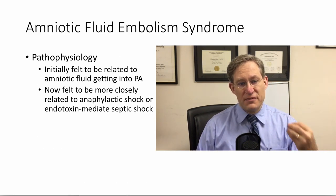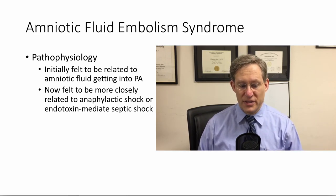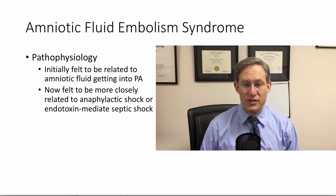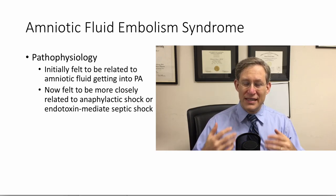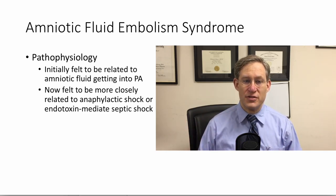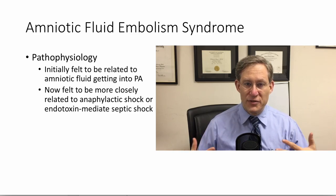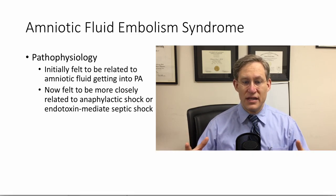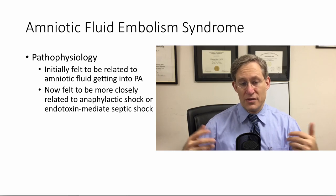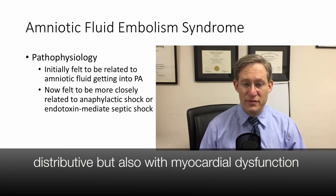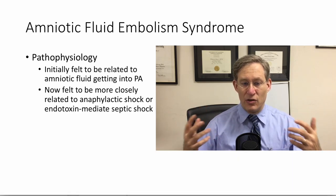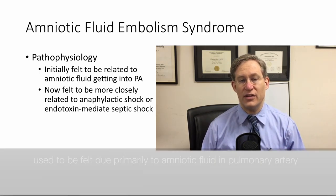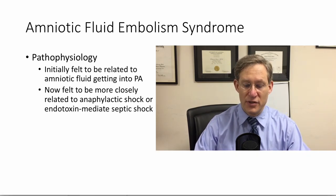This disease was initially described in the late 1920s, and it was felt that it had to do with amniotic fluid getting into the maternal circulation and the pulmonary artery. But as more analysis and research has been done, it's now felt to be some sort of response to antigens in the amniotic fluid that cause a syndrome very similar to septic shock — a distributive form of shock, a systemic global reaction to these antigens, rather than a mechanical issue related to amniotic fluid entering the pulmonary artery.